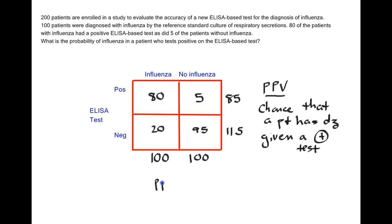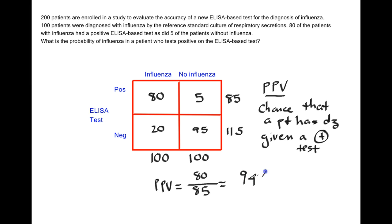So we're going to go horizontally across this two by two table. Of all the people with a positive test, there are 85 of them. What's the chance that you have disease if you have a positive test? It's this box out of the entire group — 80 out of 85 — which comes out to a 94% chance. So if you had a positive ELISA-based test in this hypothetical study, you'd have a 94% chance of actually having the flu. The converse is that despite having a positive test, there's still a 6% chance you would not have the flu. That's how you interpret positive predictive value.